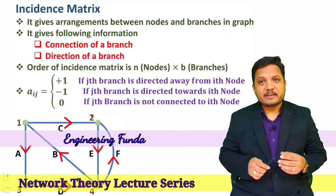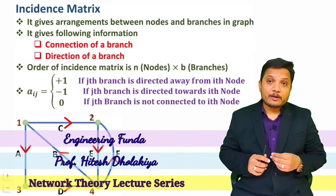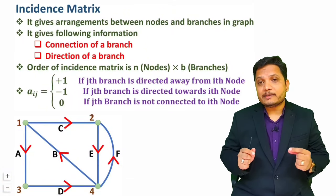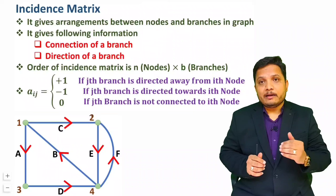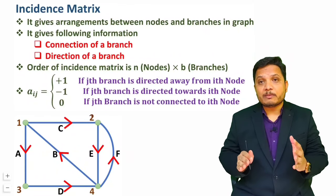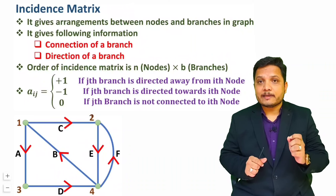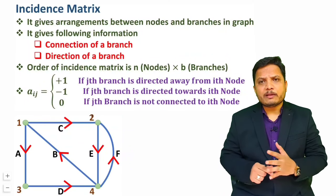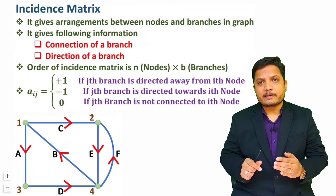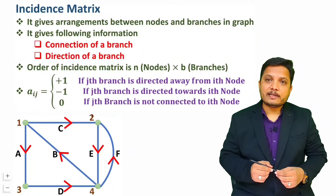Welcome to Engineering Funda family. This video is part of a network theory lecture series. In this video I'll explain incident matrix and reduced incident matrix. Based on reduced incident matrix you can calculate the number of possible trees in a graph. That's why reduced incident matrix is very essential. After watching this video you can solve any problem based on incident matrix and reduced incident matrix, explained through examples.